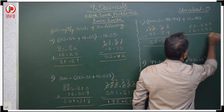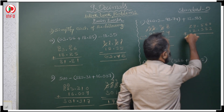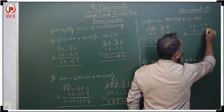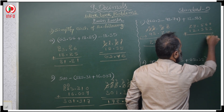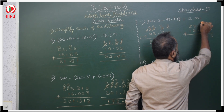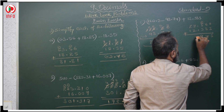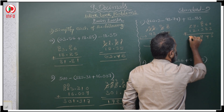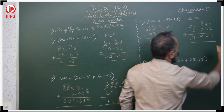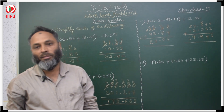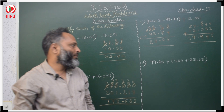27.56 plus 12.383. Here write 0 in the empty place. 0 plus 3 is 3; 8 plus 6 is 14, carry 1. The answer is 39.943.